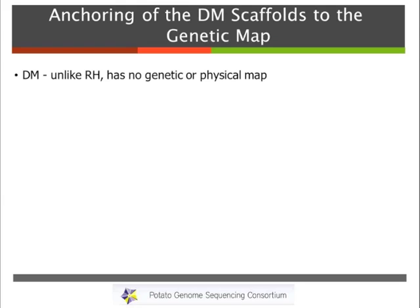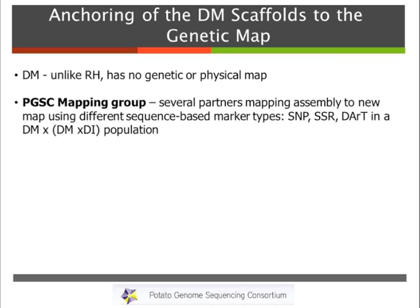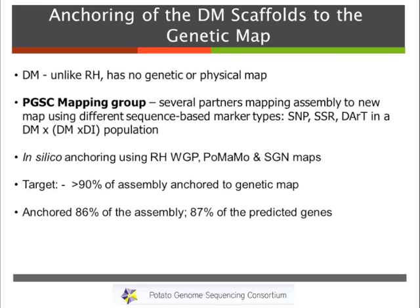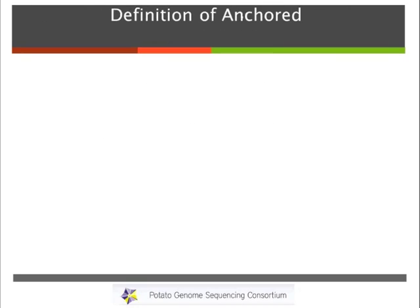There was no genetic or physical map for the double monoploid, but a subset of individuals in the PGSC formed a mapping group and started anchoring scaffolds and super scaffolds onto a genetic map using a whole series of markers — SNPs, SSRs, DARTs — with a population generated by CIP, a DM-by-DI population. They also used a physical map from RH, markers from the POMA database, and maps from STN. They targeted 90% of the assembly anchored to the genetic map. When finished, they had anchored 86% of the assembly, containing 87% of the genes.